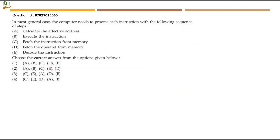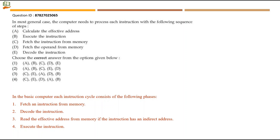Next question: in the most general case, the computer processes each instruction with the following sequence of steps. The basic computer instruction cycle consists of these phases: fetch an instruction from memory, decode the instruction, read the effective address from memory if the instruction has an indirect address, fetch the operand from memory, and then execute the instruction.